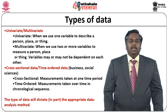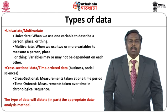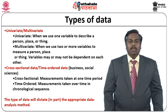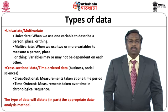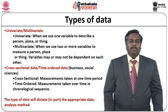Let us first understand what is univariate and multivariate type of data. Univariate means we will be working with respect to a single variable, and this single variable may be describing the given scenario — for example, it can talk about an individual, a place, or anything in the real world. When we talk with respect to a multivariate perspective, we may be using more than one variable; in other words, two or more variables will be used for measuring or quantifying the given scenario. When we measure a particular individual, we may be using two different dimensions for analyzing that individual.